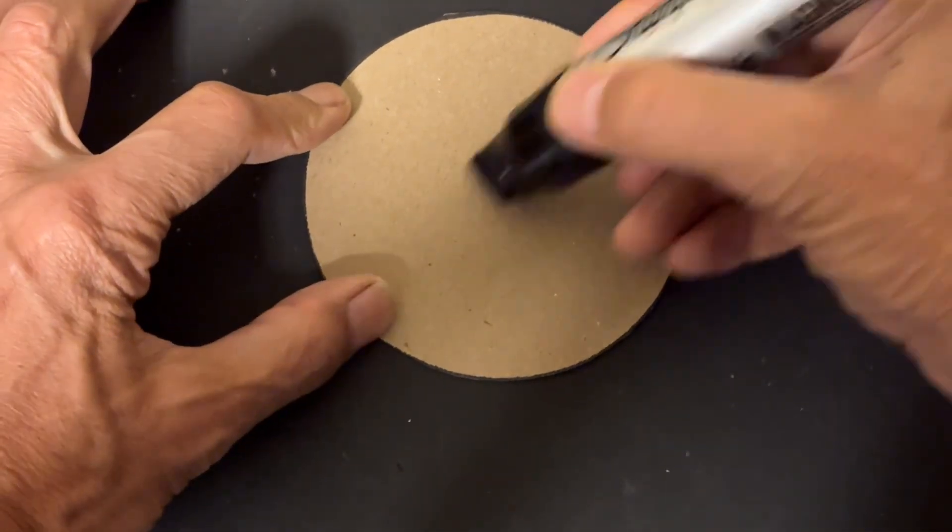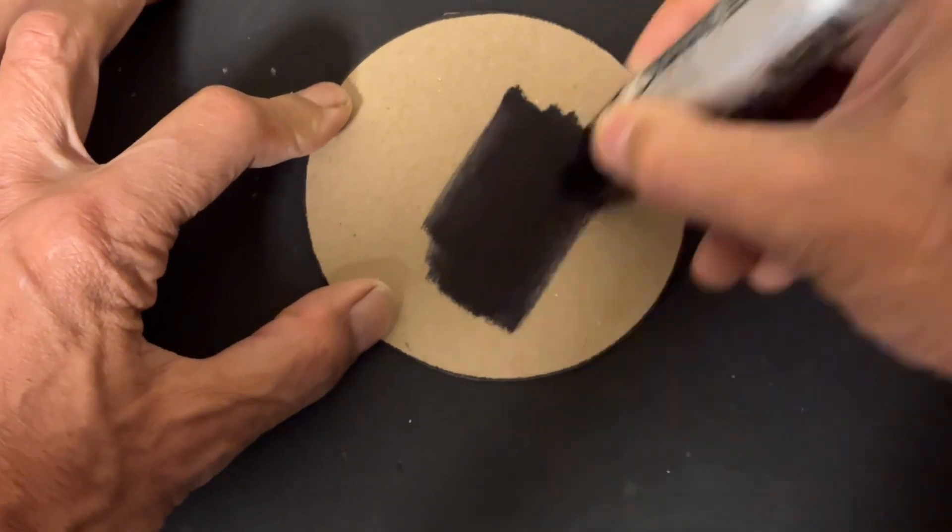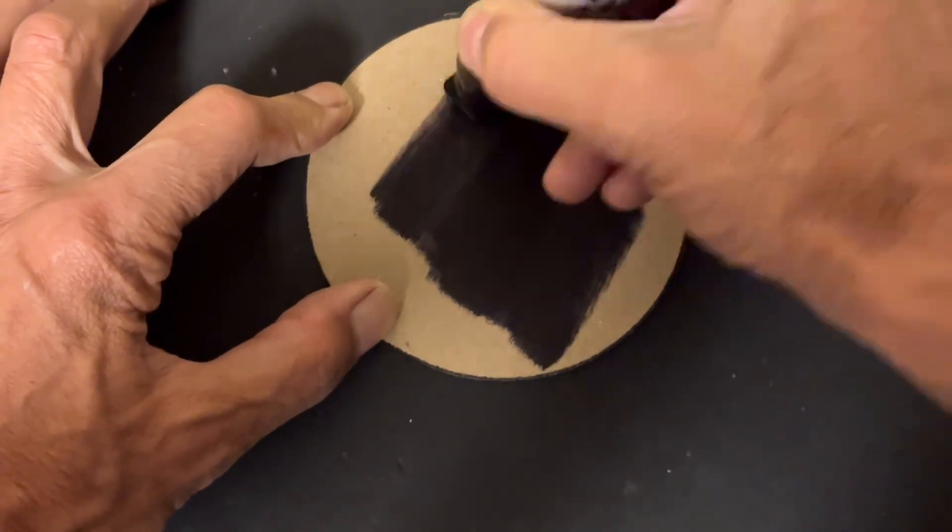Here I'm making a black cardboard disc to provide contrast for better visualization and you'll see why once I put it into the setup.